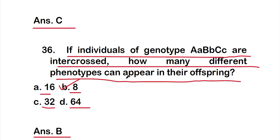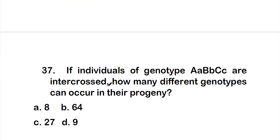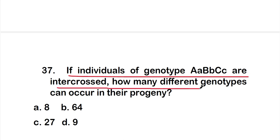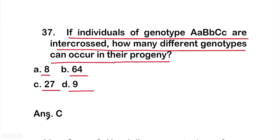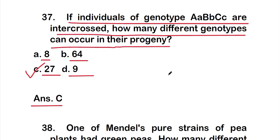Question 37: If individuals of genotype AaBbCc are intercrossed, how many different genotypes can occur in their progeny? Options are 8, 64, 27, or 9. The right answer is option C — 27 different genotypes.